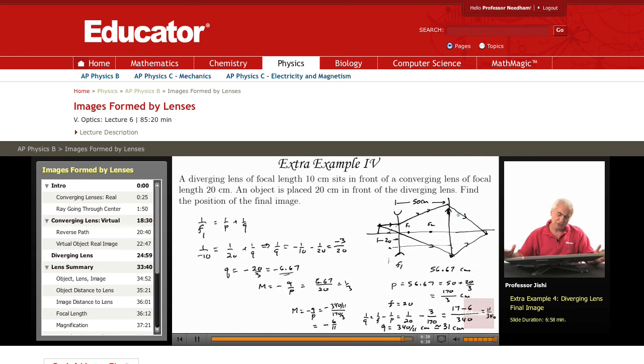Anyway, so the point of this example and the previous one is that when I combine two lenses, first you solve for the image in the first lens. This image in the first lens will act as an object for the second lens. It could be a real object like in this case, or it could be a virtual object like in the previous case.